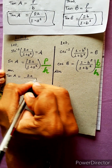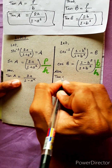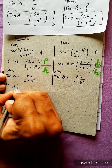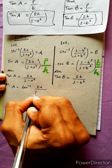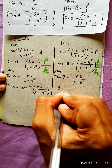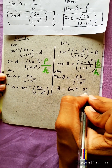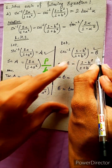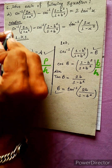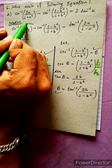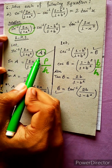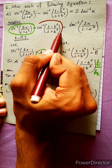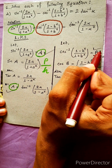So tan(A) equals 2A / (1 - A²), and tan(B) equals 2B / (1 - B²). This means sin⁻¹(2a / (1 + a²)) equals A, and cos⁻¹((1 - b²) / (1 + b²)) equals B. These are the key results.